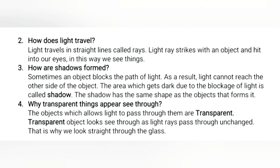Question number 3: how are shadows formed? Sometimes an object blocks the path of light. As a result, light cannot reach the other side of the object. The area which gets dark due to blockage of light is called a shadow. The shadow has the same shape as the object that forms it.